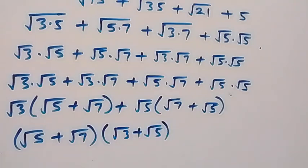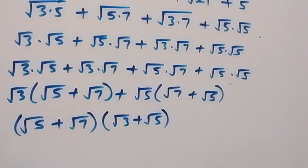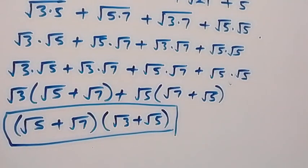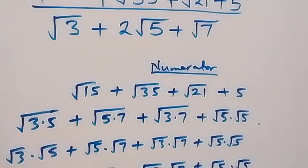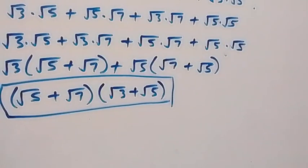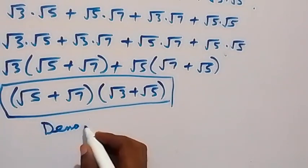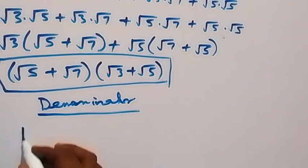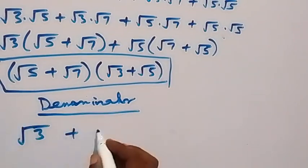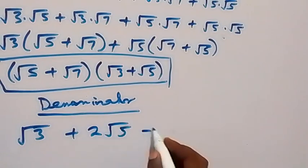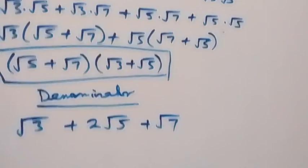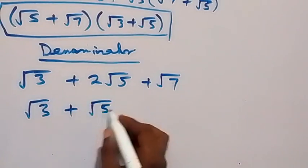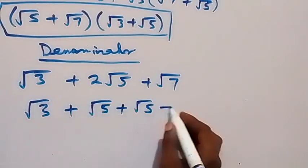So the numerator is factored that way. Now let's work with the denominator. We have root 3 plus 2 root 5 plus root 7 as our denominator. We can also simplify that: we can break 2 root 5 as root 5 plus root 5, so this is root 3 plus root 5 plus root 5 plus root 7.